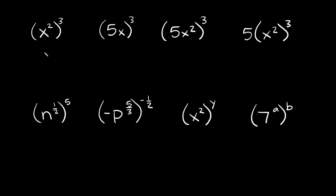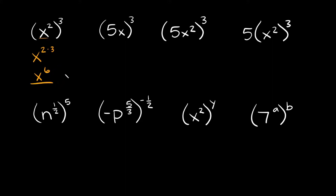Let's start with this one on the top left. We have x squared in parentheses raised to the third power. Whenever you raise a power to a power, all you do is multiply the exponents together. So here you just have x as your base, and you multiply your exponents: 2 times 3 equals 6. So x to the 6th would be your answer.